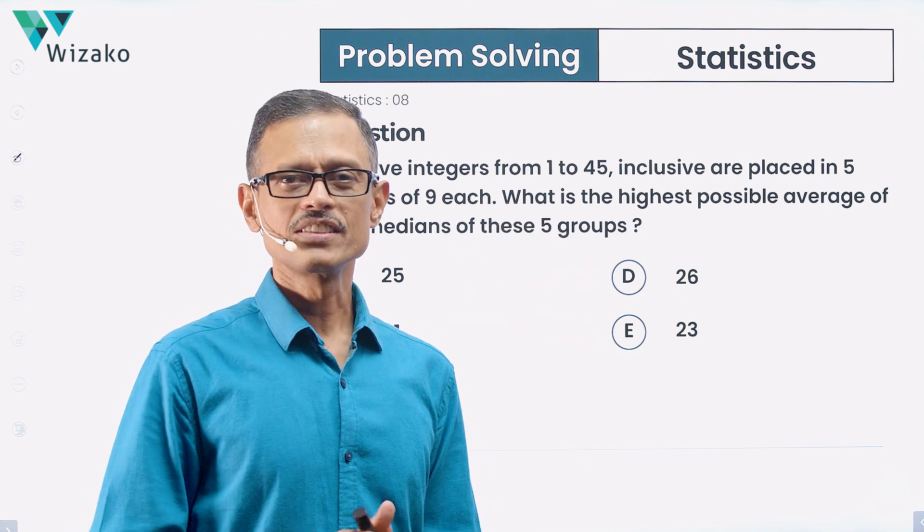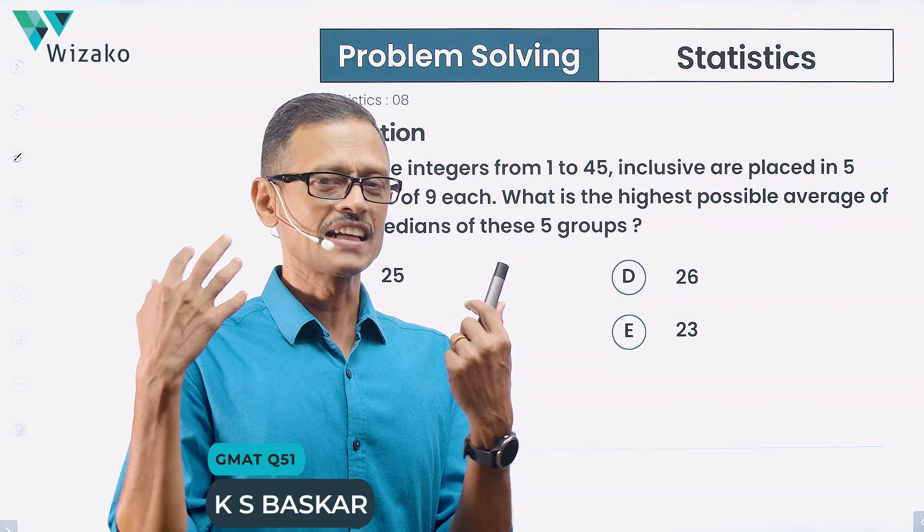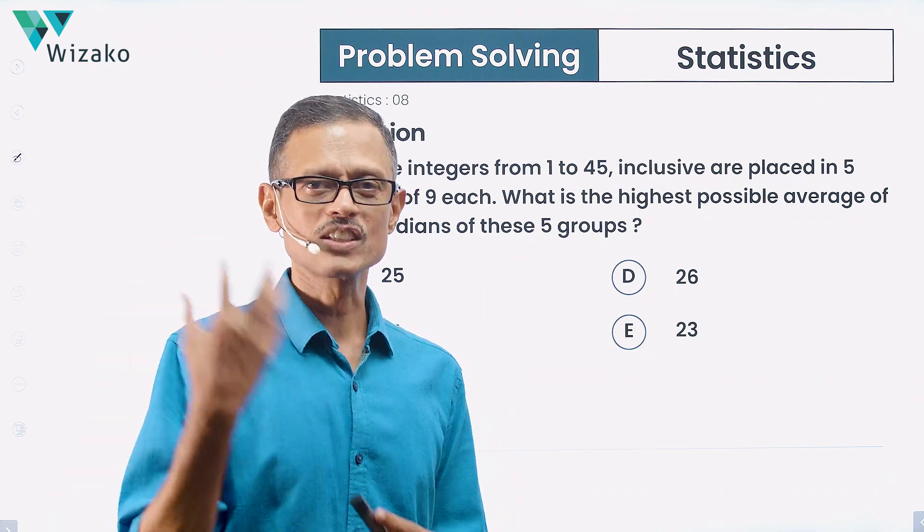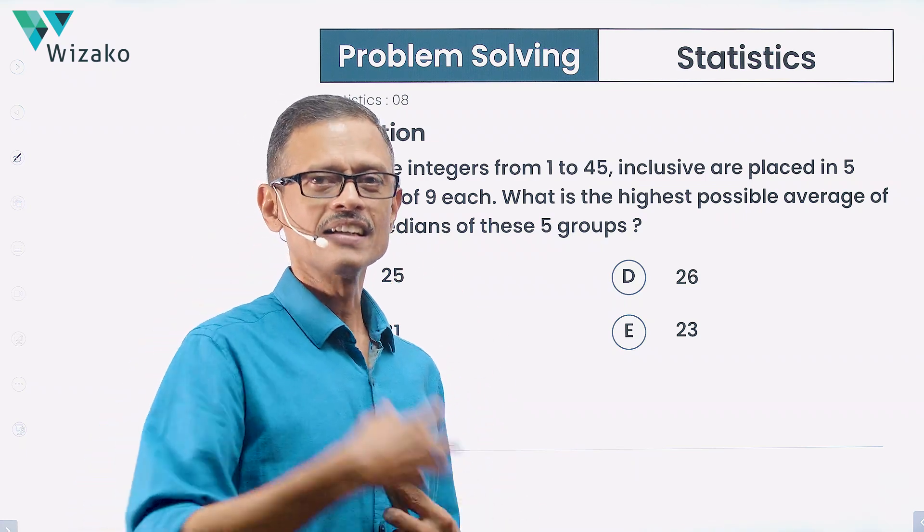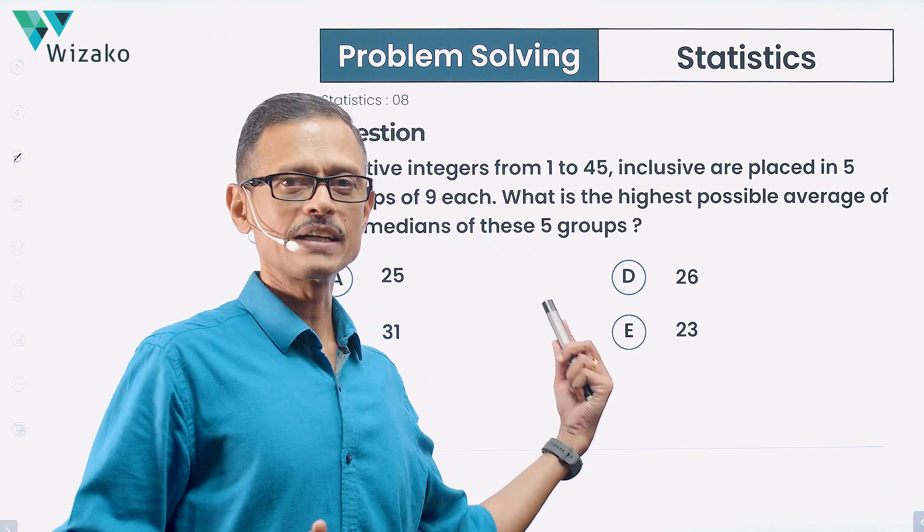This is a very interesting question. It's a GMAT hard math question from statistics and averages. Not so much calculation at all, but perceiving what the term median means, what maximizing median means. These ideas are basically tested in this question. It helps us understand the concept of median really well when we complete solving this question.